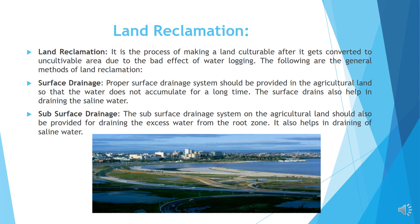Land reclamation. Land reclamation is the process of making a land culturable after it gets converted to uncultivable area due to the bad effects of waterlogging. The following are the general methods of land reclamation. Surface drainage: A proper surface drainage system should be provided in the agricultural land so that water does not accumulate for a long time. The surface drains also help in draining the saline water.